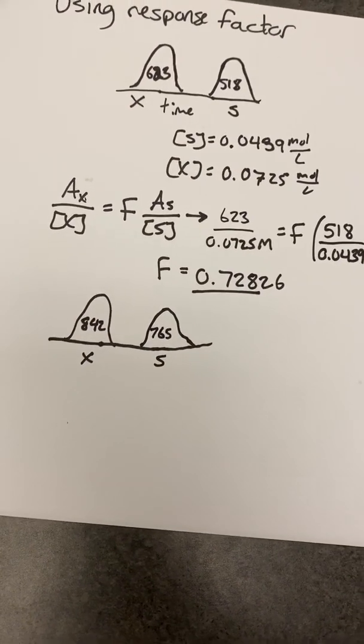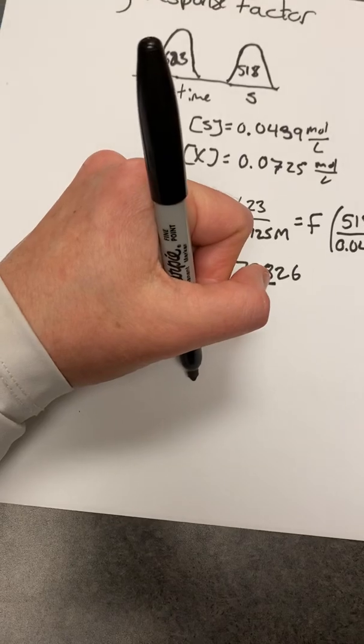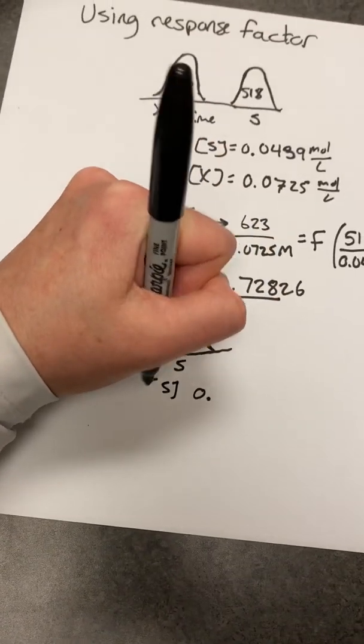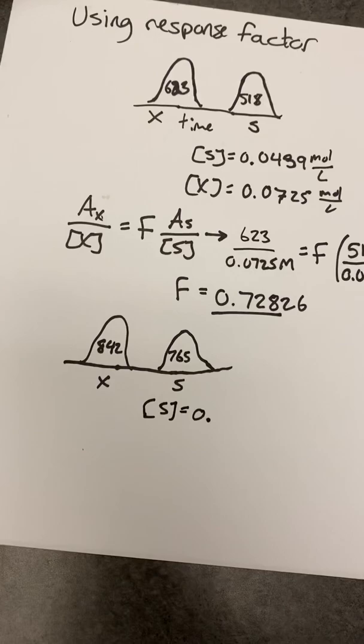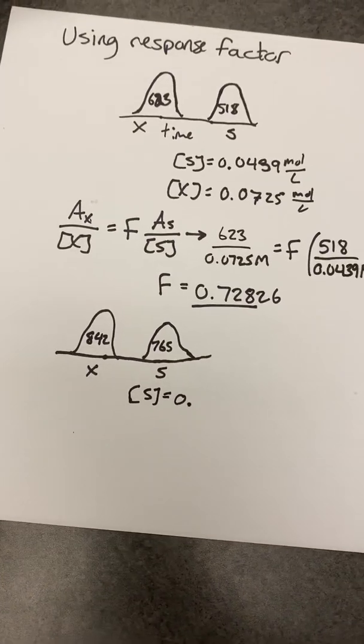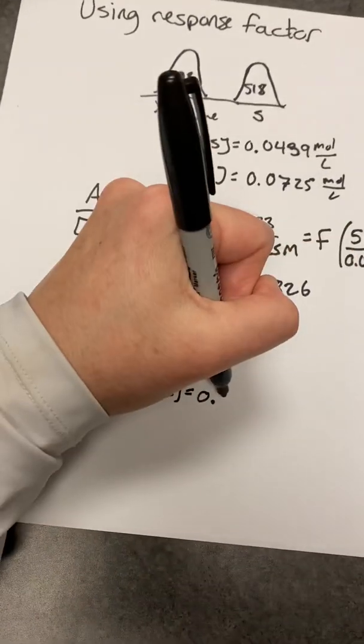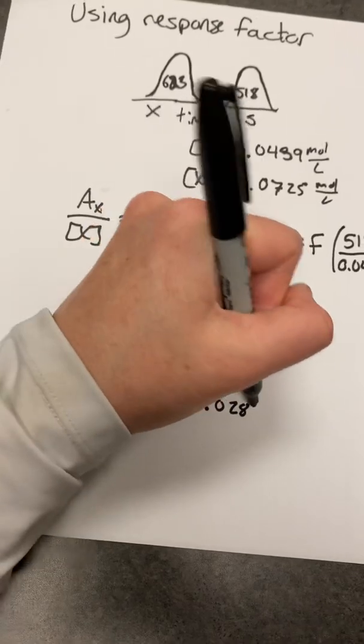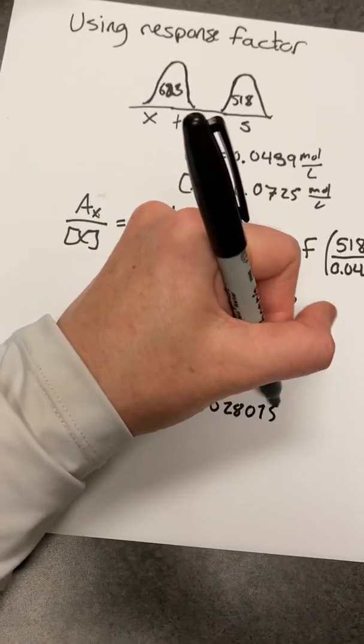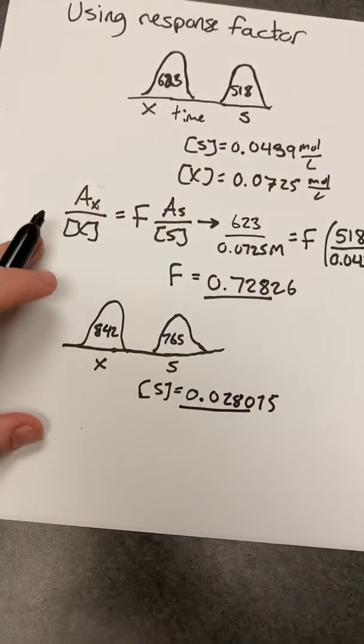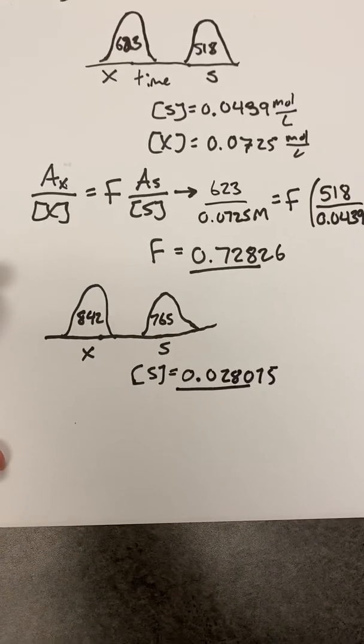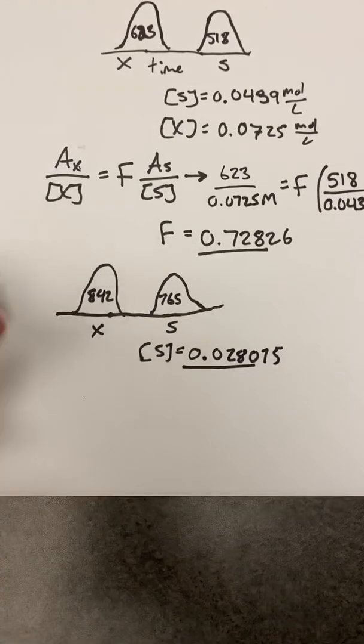And let's say we know the concentration of S. In this case, we'll determine, let's say it was given to you in the problem that S has a concentration of 0.028075. Three sig figs.